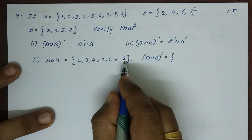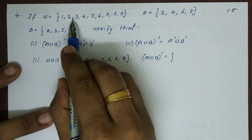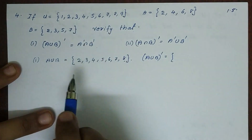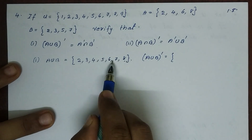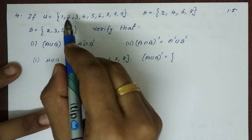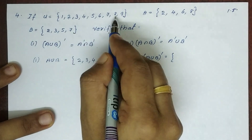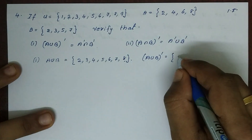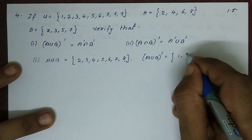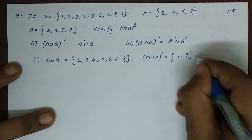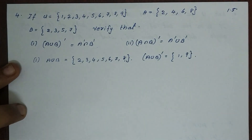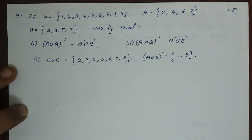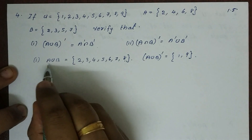In U, remove elements 2, 3, 4, 5, 6, 7, 8 that are in A union B. Then A union B complement is the remaining elements of U not in A union B.